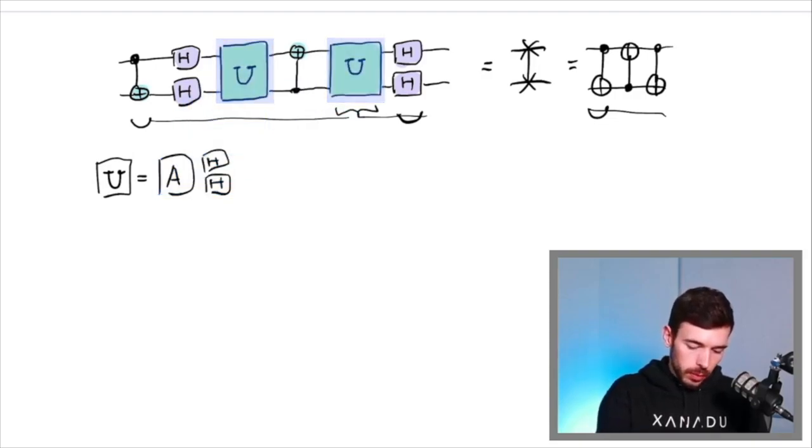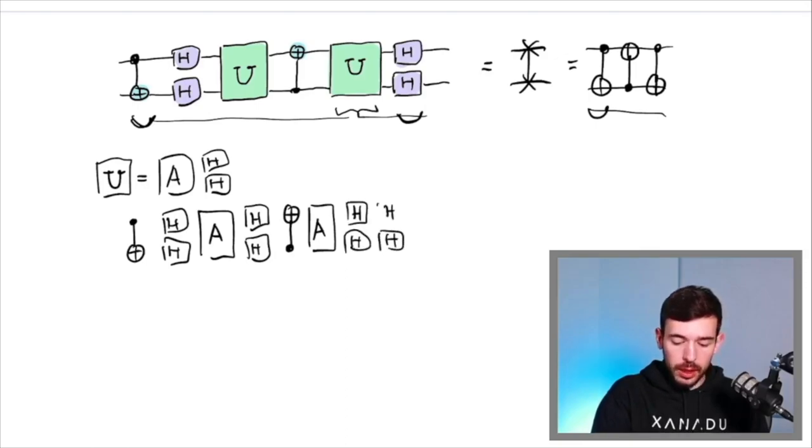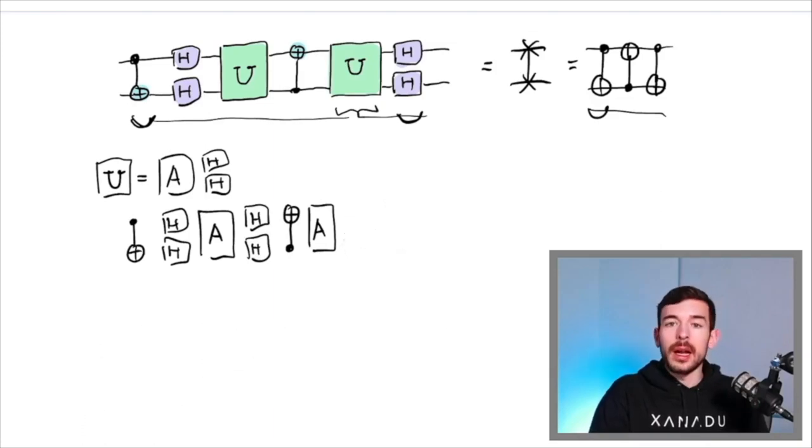So now we have a new variable that is this operator A. So what happens if now we put this definition in the initial template? Well, what we are going to have is the initial CNOT, then the two Hadamards. Now we apply U that we say is A Hadamard Hadamard, the CNOT, then again U Hadamard Hadamard, and finally the two Hadamards. So actually, the Hadamard gate is a special gate that two times the Hadamard is equal to the identity. So they are going to cancel. And we just remove, thanks to that, the two final Hadamards of our template.